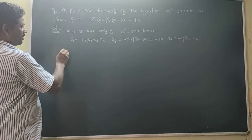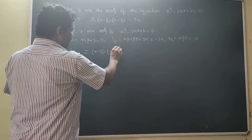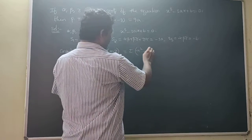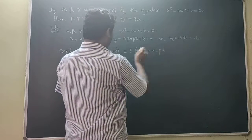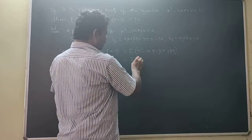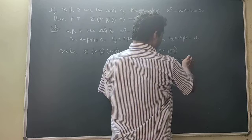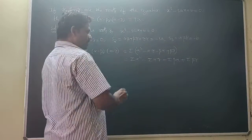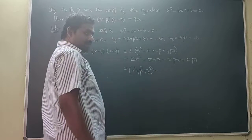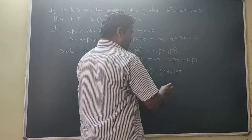So let us consider summation of (alpha - beta)(alpha - gamma). Multiply it out: summation of alpha² - alpha·gamma - beta·alpha + beta·gamma. That equals summation alpha² minus summation of (alpha·gamma + gamma·beta + beta·alpha).